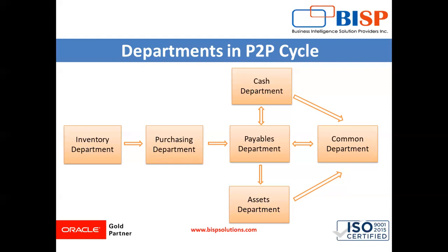The next step is purchase requisition approval. After submitting the purchase requisition, it is reviewed by the department head and procurement officer. Approvals can either be approved or rejected after evaluating the needs, verifying whether the budget is available, and validating the purchase requisition form to confirm that the products and services are indeed in shortage.